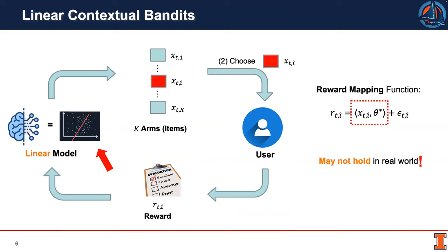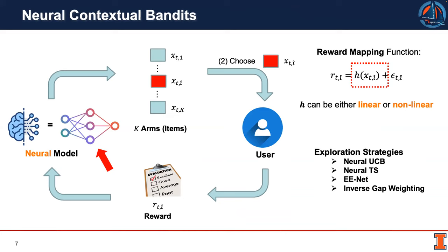In the past, linear contemporal boundaries assumed a linear reward mapping from the item context to the reward. However, this reward assumption may not hold in the real world. Therefore, in recent years, the neural contemporal boundaries has emerged as a promising direction to leverage the power of the neural network to learn a more universal reward mapping.